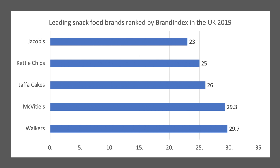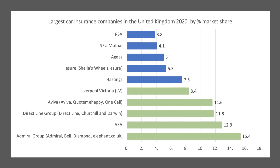Another good example is the snack food market — biscuits, crisps, and other things. Walker's is by far the biggest crisp manufacturer in the UK, alongside McVitie's, Jaffa Cakes, and Kettle Chips. The car insurance market is also dominated by essentially six firms — the top five being LV, Aviva, Direct Line, AXA, and Admiral Group. A rule of thumb for oligopoly is that the top five firms together have a market share in excess of 60%.